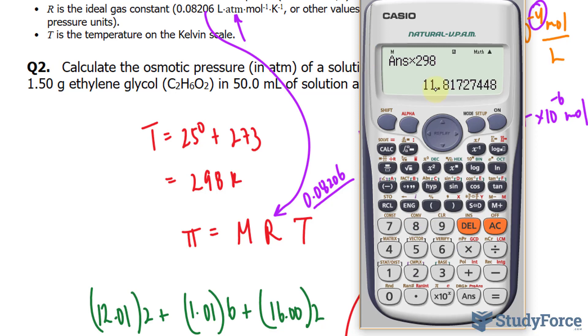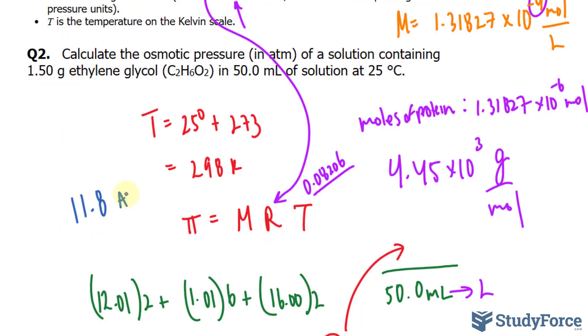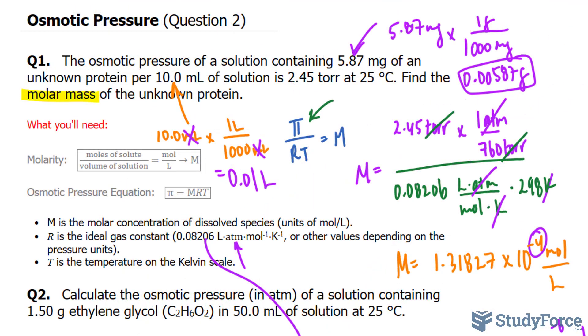This gives us 11.81, and we need this to three significant figures, so our final answer should be 11.8 atmospheres. And there you have it, another example on how to calculate osmotic pressure. Thank you.